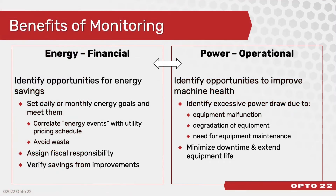With energy, it's financial. Once you have visibility into your energy consumption you can start to identify opportunities for savings. With power, it's operational. Power profile is often an indicator of machine health. Excessive power draw, sometimes combined with other parameters, can be an indication of equipment malfunction, degradation of equipment, or the need for equipment maintenance.